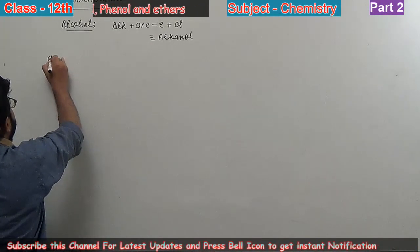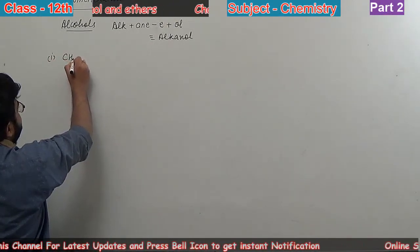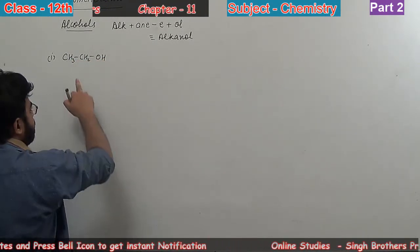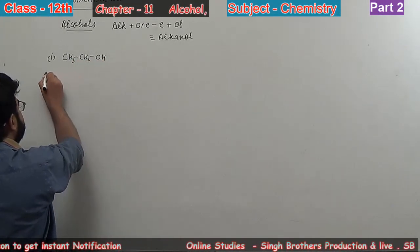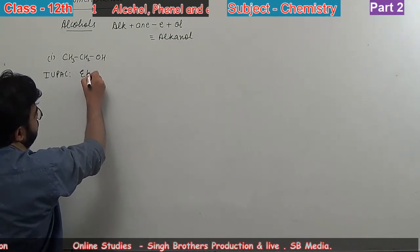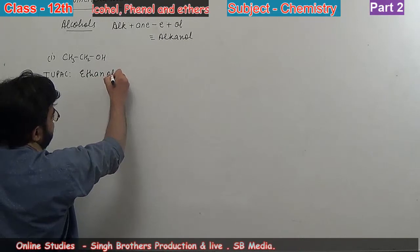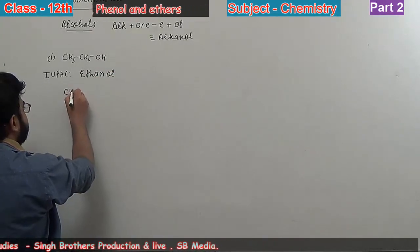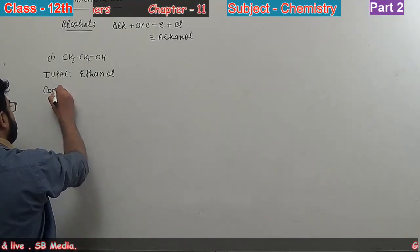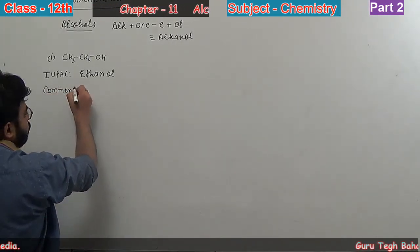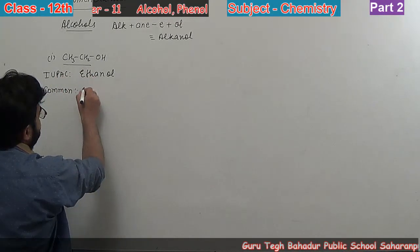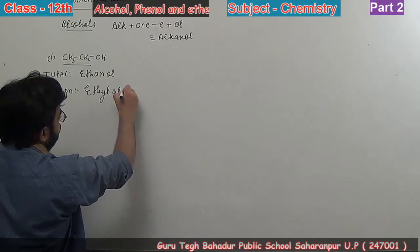First example: CH3-CH2-OH. This is an alcohol. There are two carbons, so the IUPAC name is ethanol. For common name, we find the alkyl group. Here the alkyl group is ethyl, so it's ethyl alcohol.